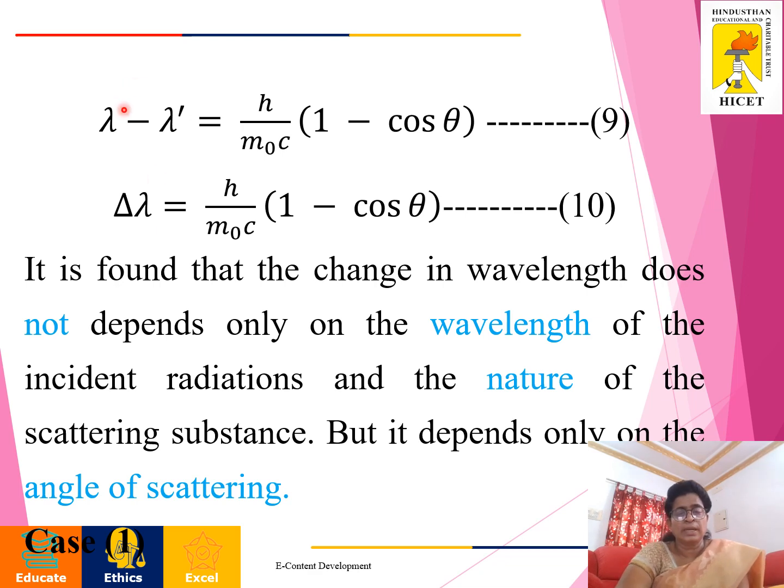That is lambda minus lambda dash equals h by m not c into 1 minus cos theta. Lambda minus lambda dash is the change in wavelength. This can be written as del lambda. That is equal to h by m not c into 1 minus cos theta. From this equation, we know that this change in wavelength is purely based on theta, the angle of scattering.